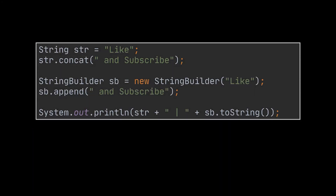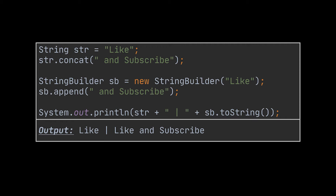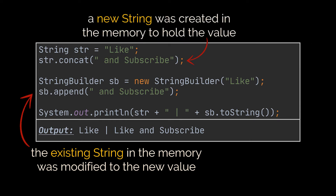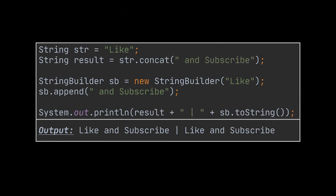Take a look at this example: we created both a String and a StringBuilder from the word 'like', then concatenated 'and subscribe' using methods provided by both. When we print the output, in the case of the String, nothing was appended — only 'like' was printed. In the case of the StringBuilder, we printed 'like and subscribe' as expected. When we modified the String, a new string was created in memory but never used. To retrieve it, we must store the result of the concatenation in a new string reference.